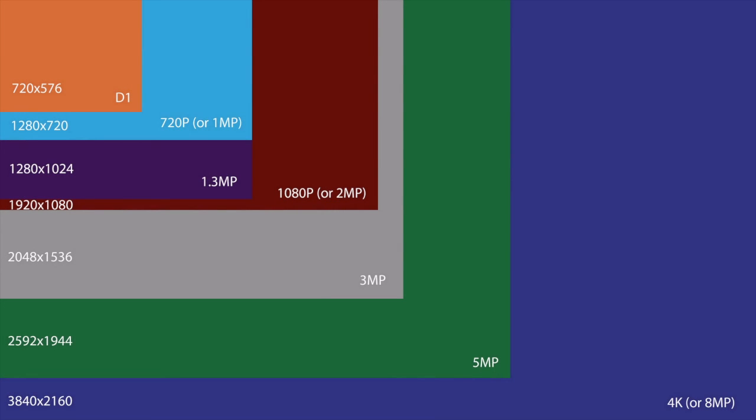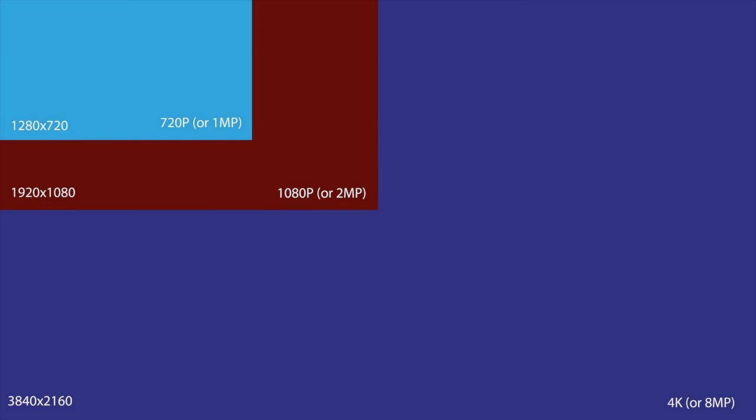The term used for detailing resolution within the security industry has become the megapixel. This however is a bit misleading as it's a measurement of area, not definition level. Hence I prefer to use the AV industry terms which clearly define the level of detail you're going to achieve, with terms such as 1080p, 720p, and 4K. The only common formats that actually fit the 16x9 aspect ratio are those AV industry terms: 720p, 1080p, and 4K.